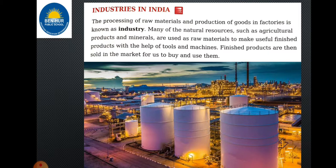So what is an industry? The processing of raw material and production of goods in the factories is known as industry. Many natural resources such as agricultural products and minerals are used as raw material to make them into useful finished products with the help of tools or machines. These finished products are then sold in the market for us to buy and use.